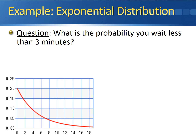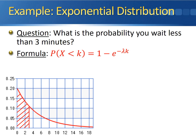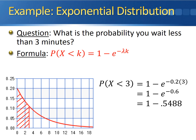For the probability of waiting less than three minutes, draw the exponential distribution and shade the area from zero to three. Since x is less than three, use the equation 1 minus e to the negative lambda times k, where k equals 3. This gives 1 minus e to the negative 0.2 times 3, which is 1 minus e to the negative 0.6, equals 1 minus 0.5488, for a final probability of 0.4512.